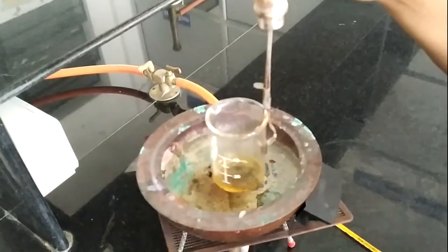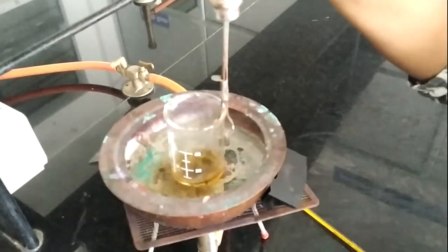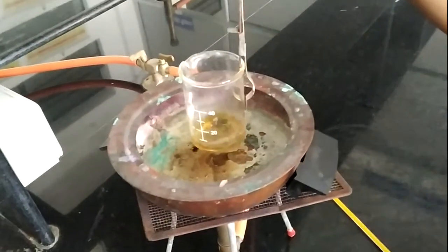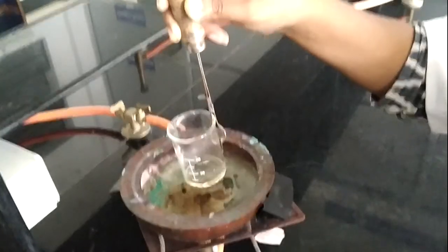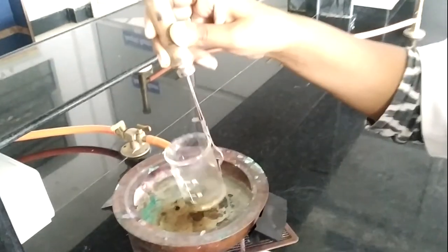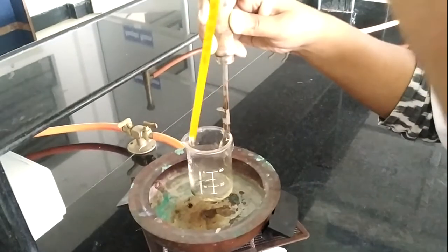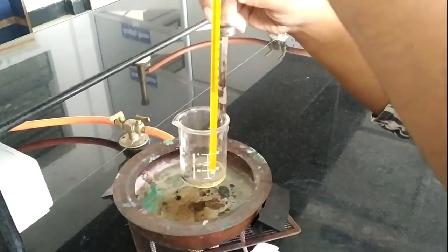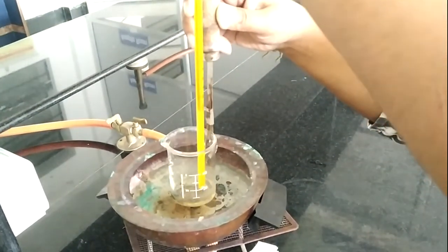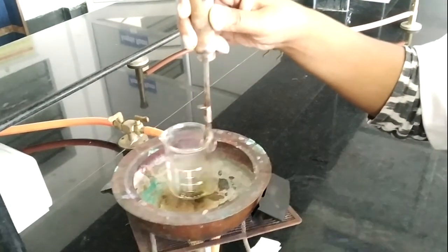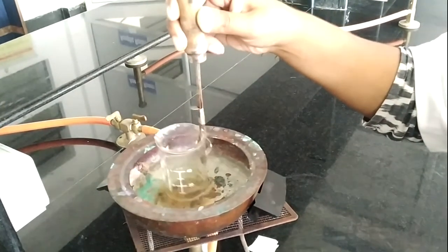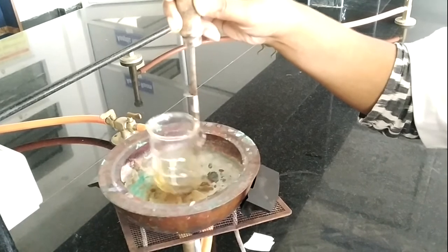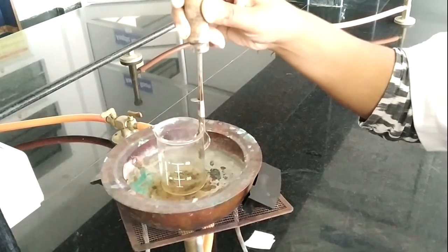Now we proceed for the heating part. I proceed with heating the iodine solution and we will heat it till the brown color disappears. Now the brown color is almost going to disappear. I measure the temperature, it reaches almost 50 degrees Celsius, so I am going to add the yellow soft paraffin into it. Previously we will wait till the temperature reaches to 40 degrees Celsius.